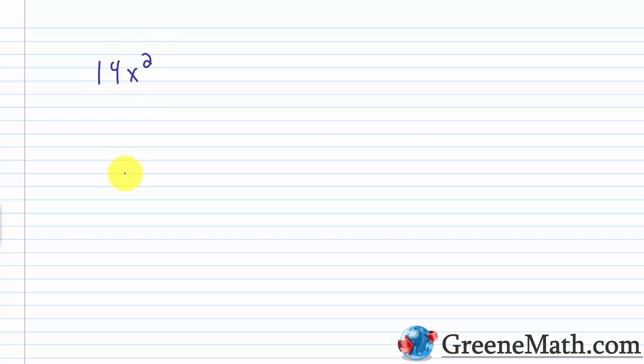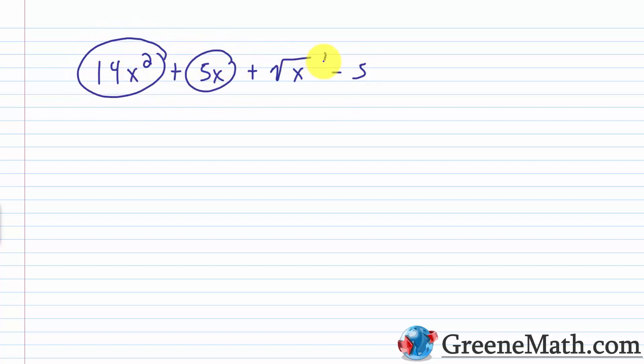When we place terms together using either a plus or minus operation, we end up with an algebraic expression. An algebraic expression could be one single term — like the number 14 or 14x squared. But it can also be multiple terms separated by plus or minus operations, such as 14x squared plus 5x plus the square root of x minus 5. In each case, each part is a term, and they're separated by plus or minus operations.